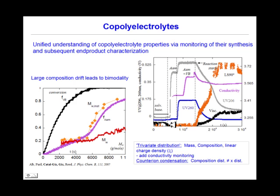Copolymer electrolytes are synthesized and monitored by AECOM as well. Here we see a copolymer of acrylamide and styrensulfonate. Shown on the left are the styrensulfonate monomer conversion, acrylamide conversion, and molecular weight. The styrensulfonate finishes very quickly, whereas acrylamide is only 27–30% polymerized at that point. As the styrensulfonate finishes, acrylamide polymerizes faster, allowing us to obtain essentially a blend.